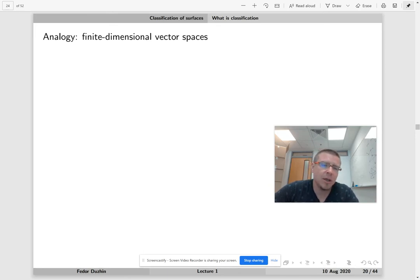So the analogy here is finite dimensional vector spaces. So first, recall that a vector space is any construction where elements called vectors can be added together. So like if we have two vectors, say x and y, then we can add them together. So there will be a vector x plus y.